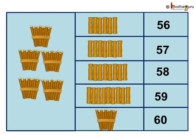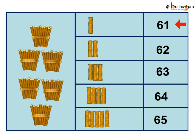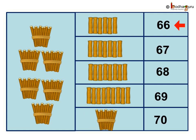Correct? 6-1: 61, 6-2: 62, 6-3: 63, 6-4: 64, 6-5: 65. Then comes 6-6: 66, 6-7: 67, 6-8: 68, 6-9: 69, 7-0: 70, which is 7 tens.